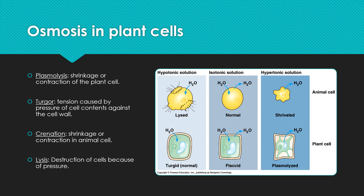If you place the plant cell in a hypertonic solution, water from the inside of the cell is going to move out, and the plant cell is going to become plasmolyzed. If you put the cell into an isotonic solution, it's what we call flaccid — it's relatively normal but not rigid, not supported. Also in the case of animal cells, the shriveling of an animal cell is called crenation, and when water moves into the cell and causes it to burst, that's called lysis — the destruction of cells due to a buildup of pressure. So that is just a quick overview of osmosis and diffusion.